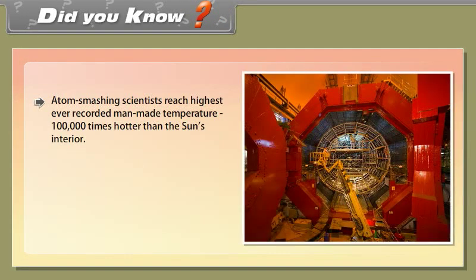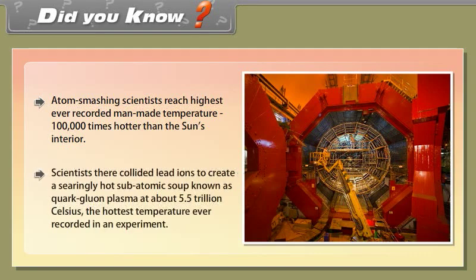Did you know? Atom-smashing scientists reached the highest ever recorded man-made temperature — one lakh times hotter than the sun's interior. Scientists collided lead ions to create a searingly hot subatomic soup known as quark-gluon plasma, at about 5.5 trillion degrees Celsius — the hottest temperature ever recorded in an experiment.